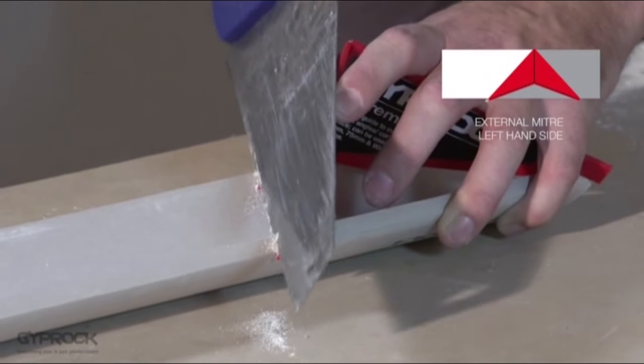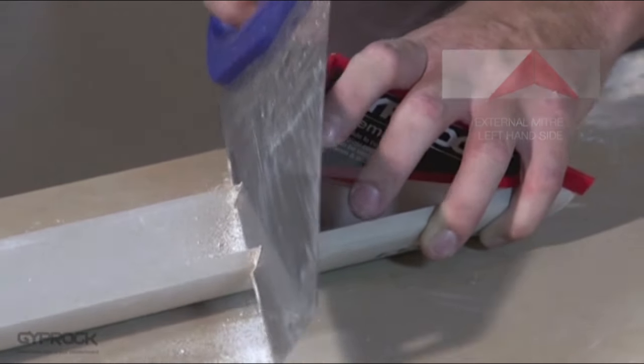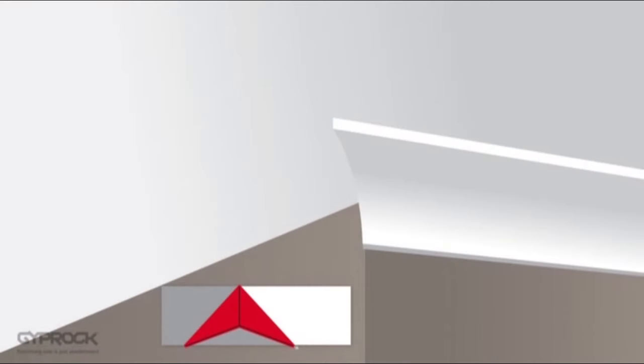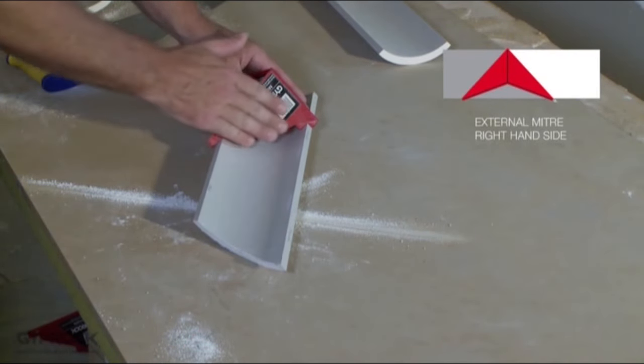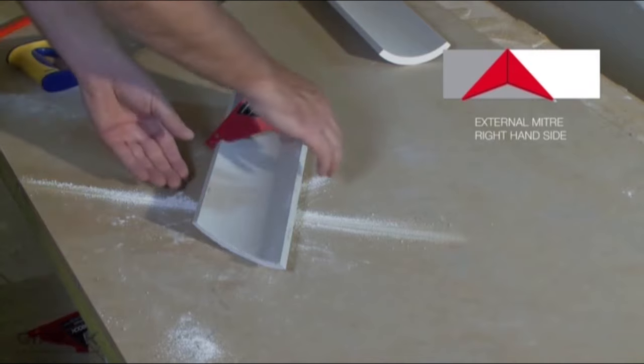Just make sure you're using the correct side of the mitre master. For the right side of an external angle mitre use the right side of the mitre master. Remembering that the piece you cut away is the piece you'll be keeping.